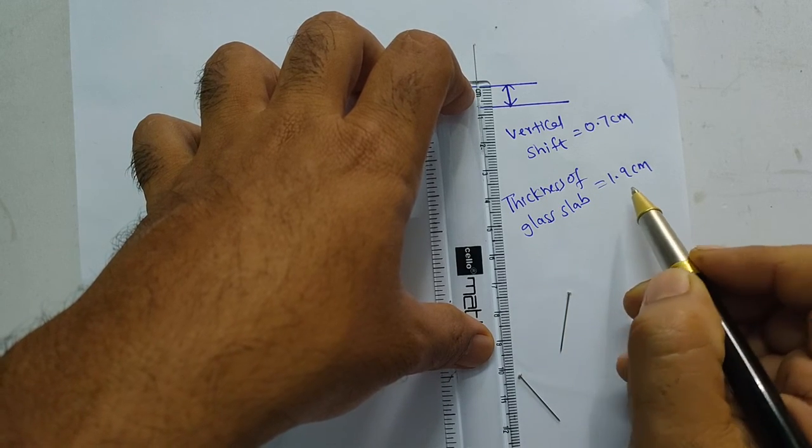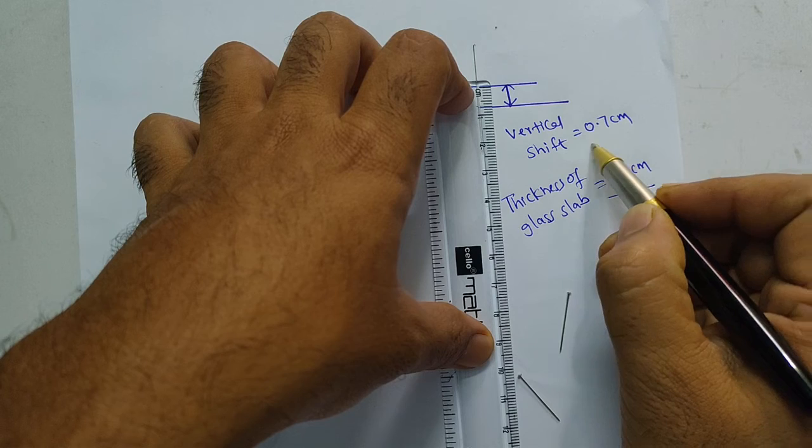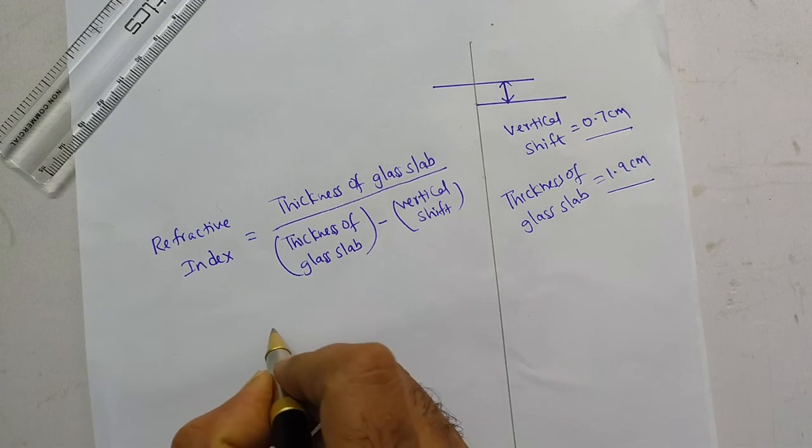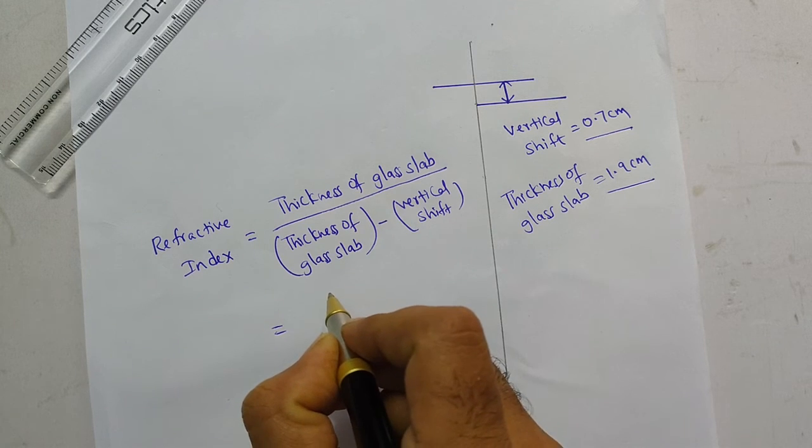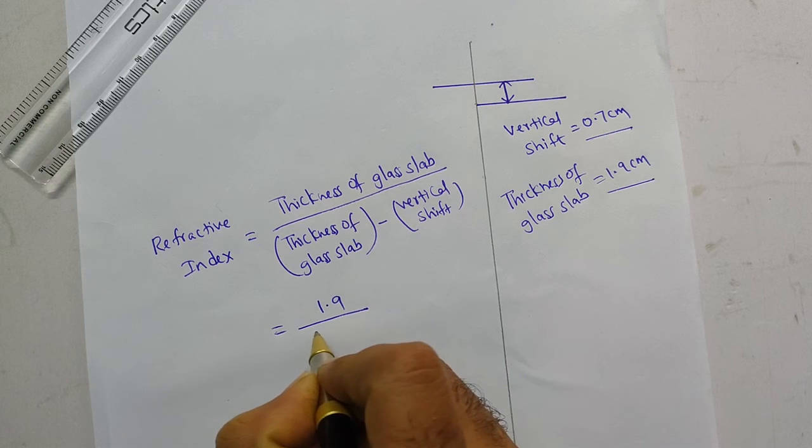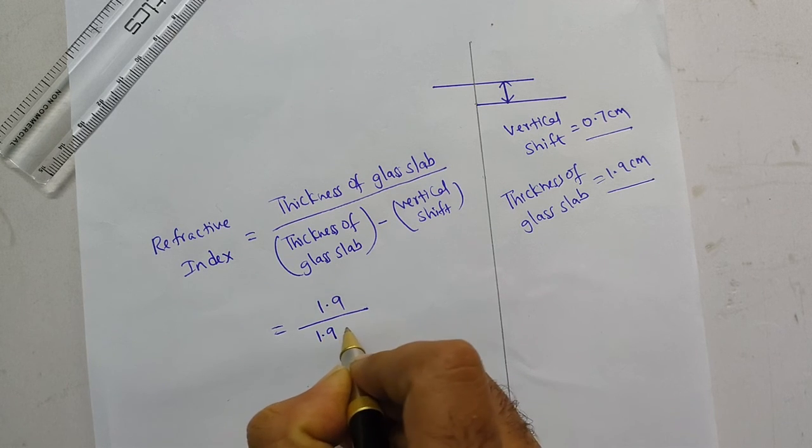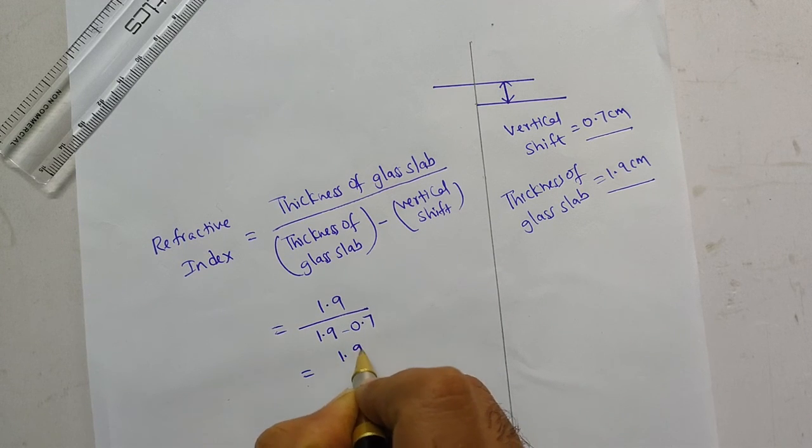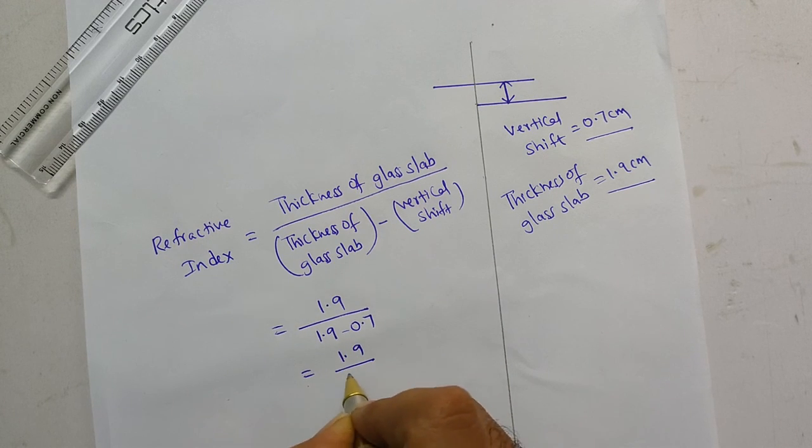Now by using the formula we can find refractive index of glass slab that is equal to thickness of the glass slab by thickness of glass slab minus vertical shift that is 1.9 divided by 1.9 minus 0.7 and if we simplify this we get refractive index of glass slab as 1.58.